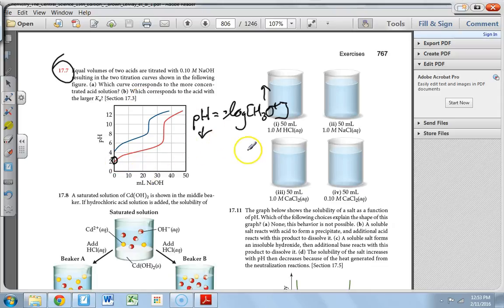Okay now for part B it says which corresponds to the acid with the larger Ka. And now this takes into account the fact that halfway to the equivalence point, remember the equivalence point is halfway up this slope here, but halfway to the equivalence point is what we call the halfway point.